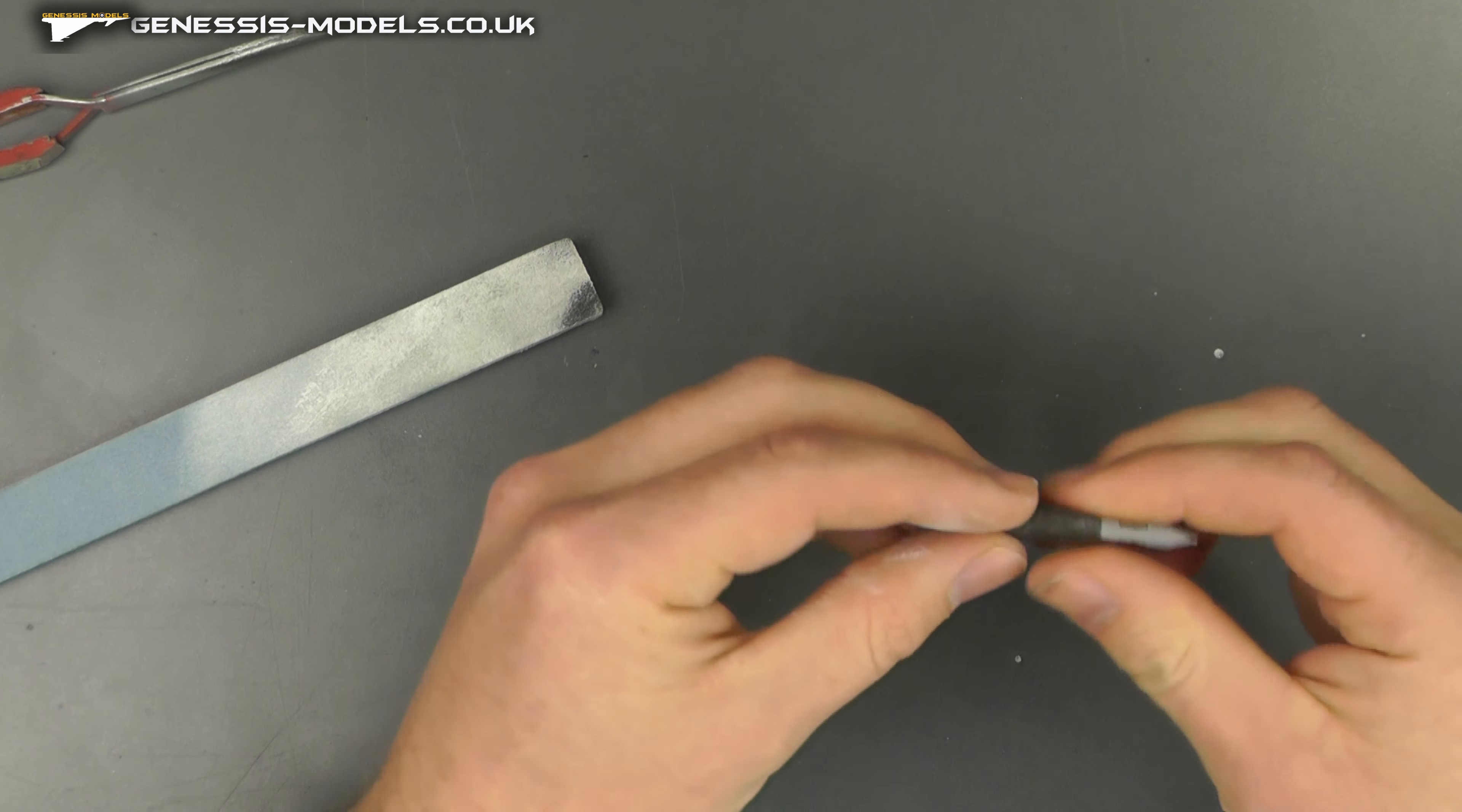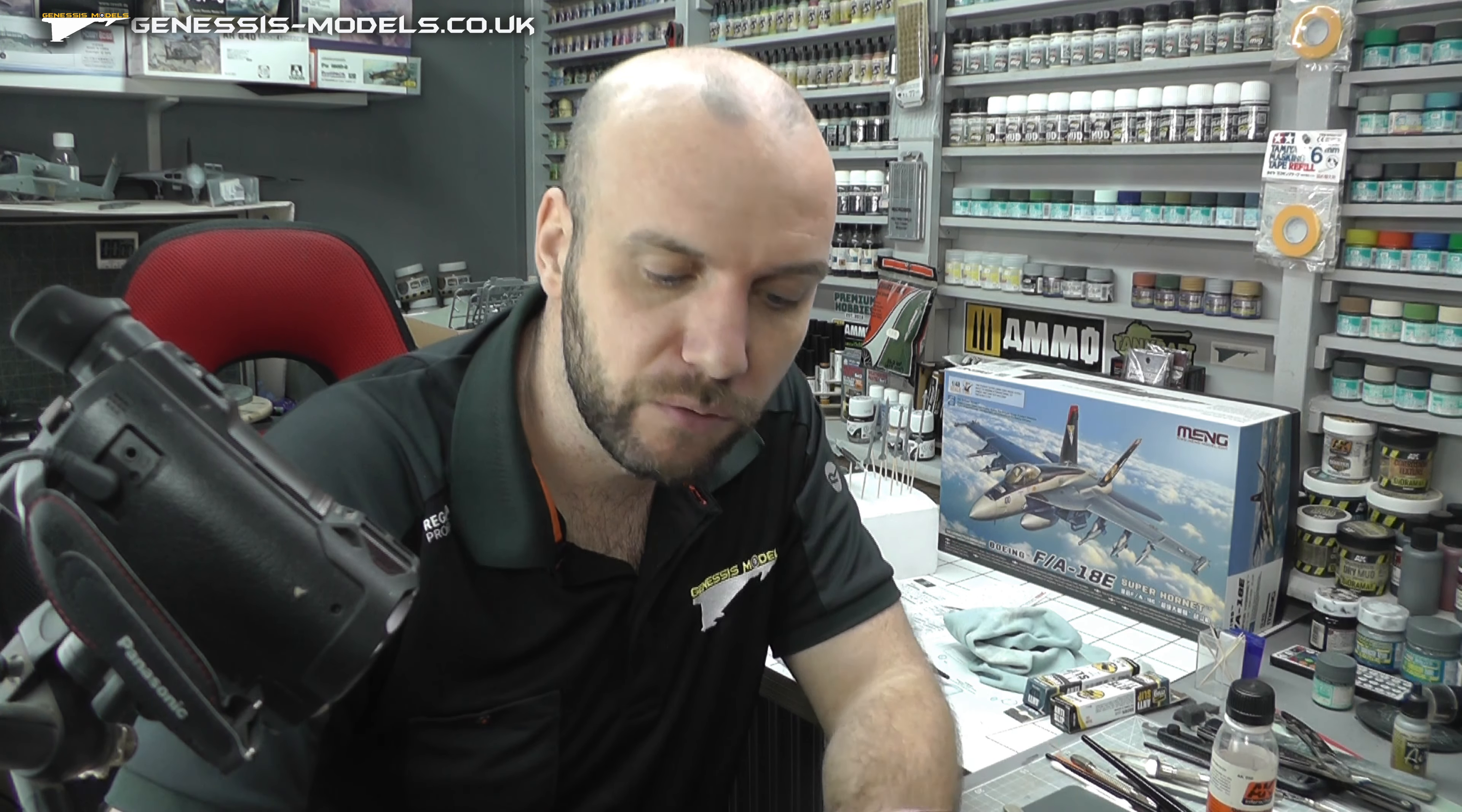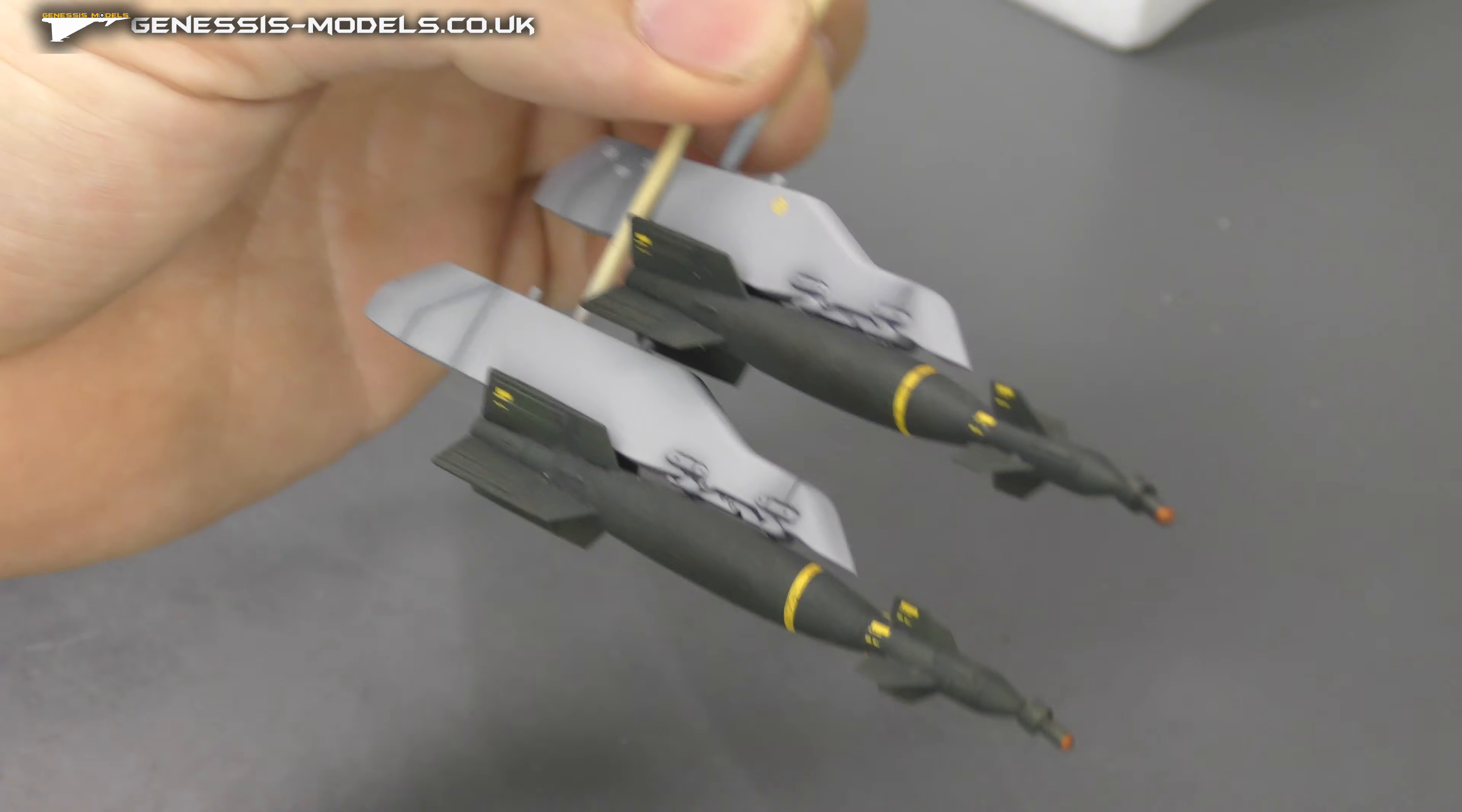So all there's left to do now is to go off and actually build this model, get these GBUs all painted up so you can actually see the results at the end. And here they are, all nicely done, all finished and ready to go.